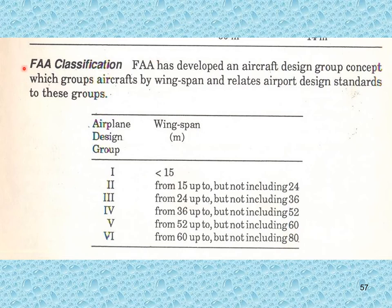The FAA has developed an aircraft design group concept which groups aircraft by wingspan and relates airport design standards to these groups. Categories range from one to six, and based upon wingspan, an appropriate group number is selected.